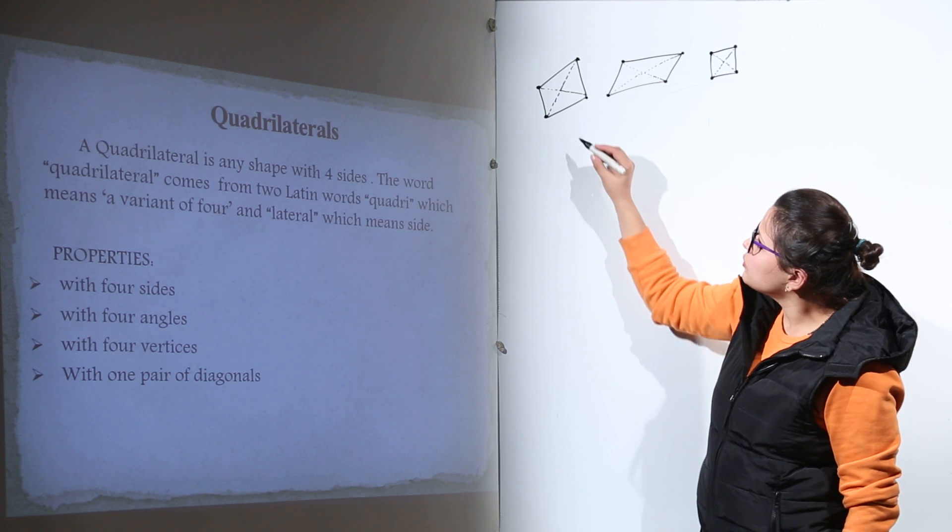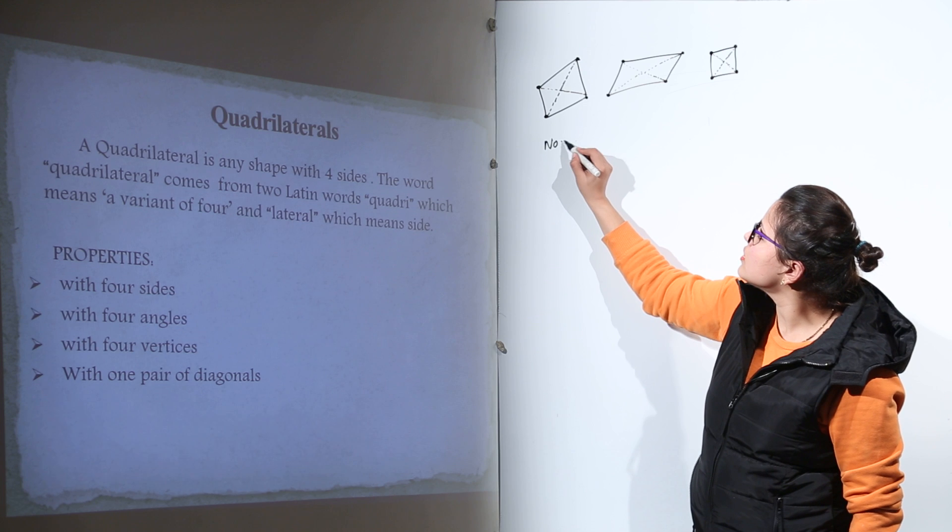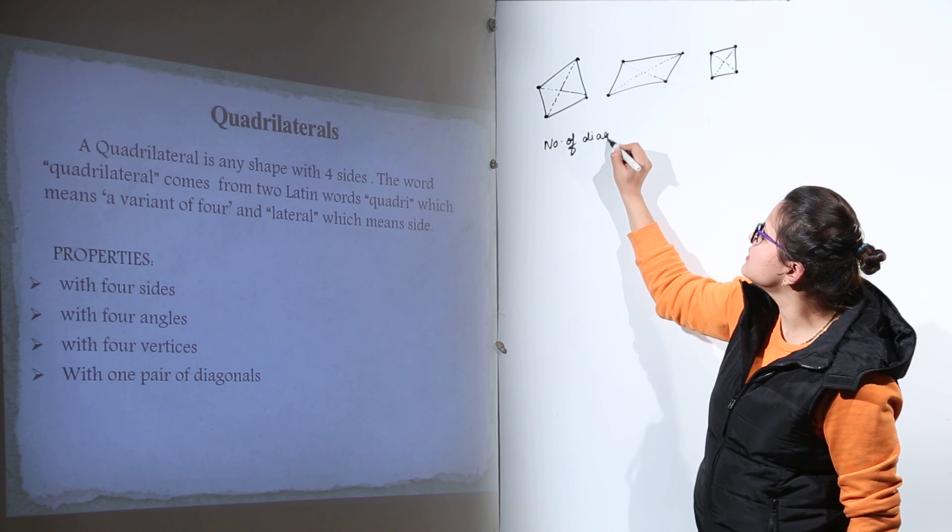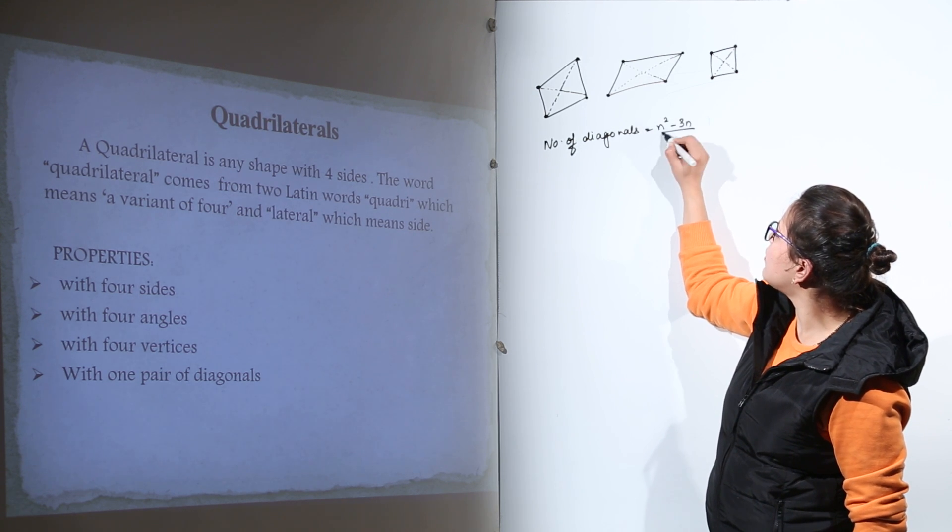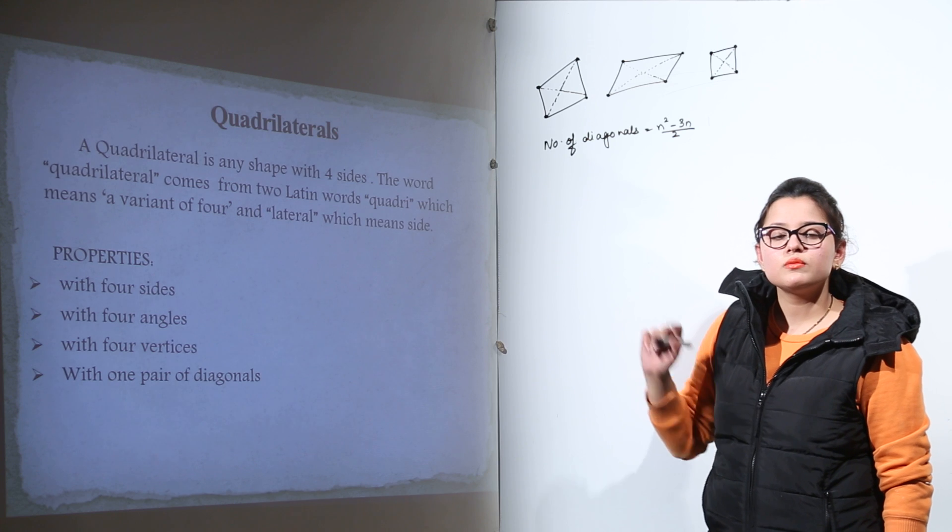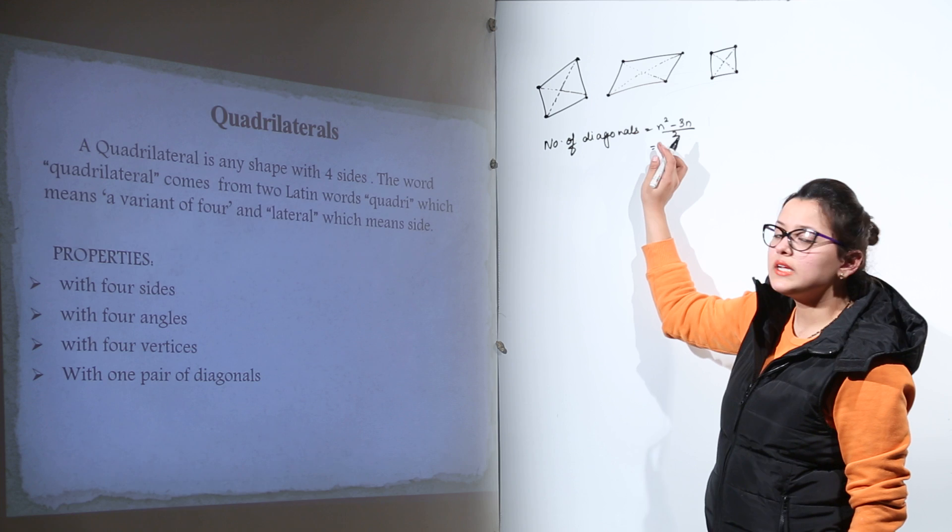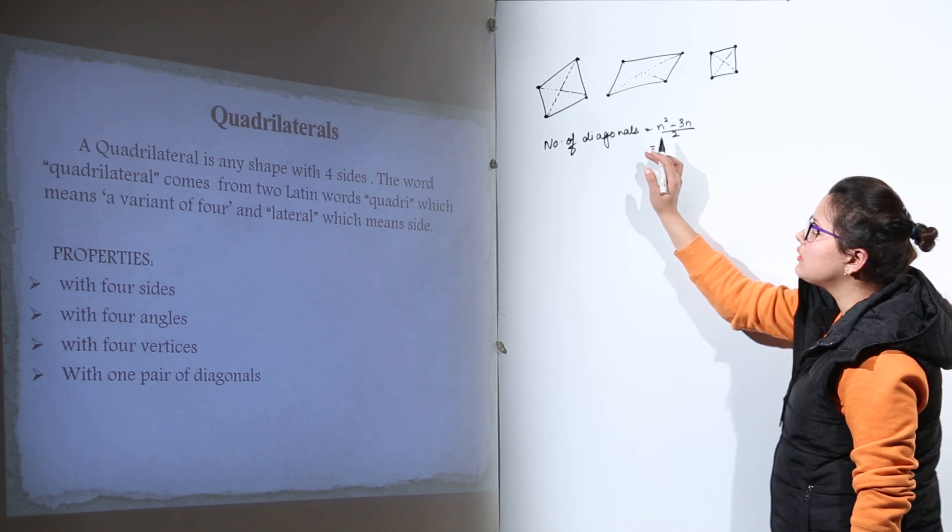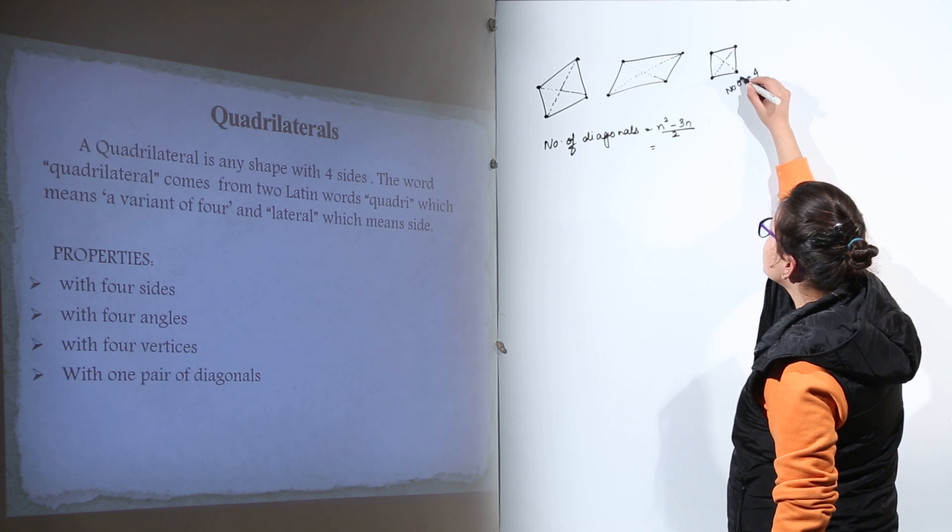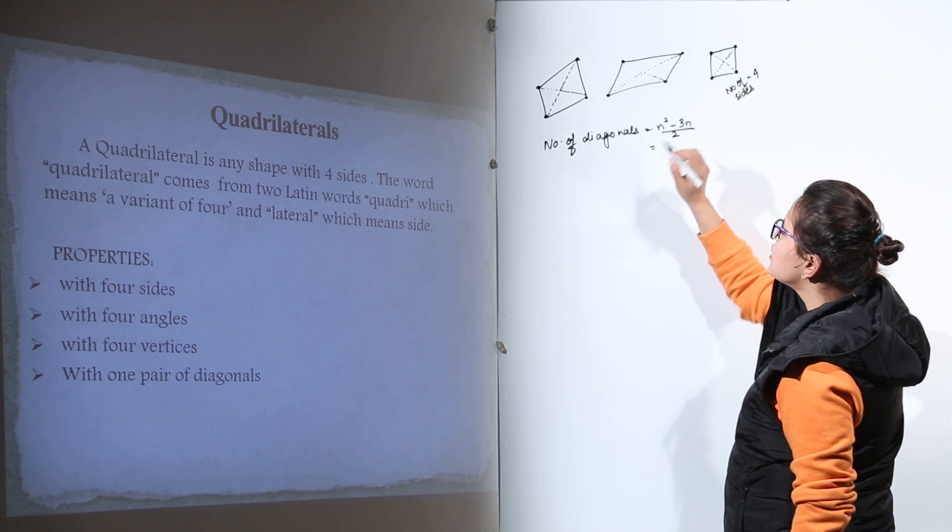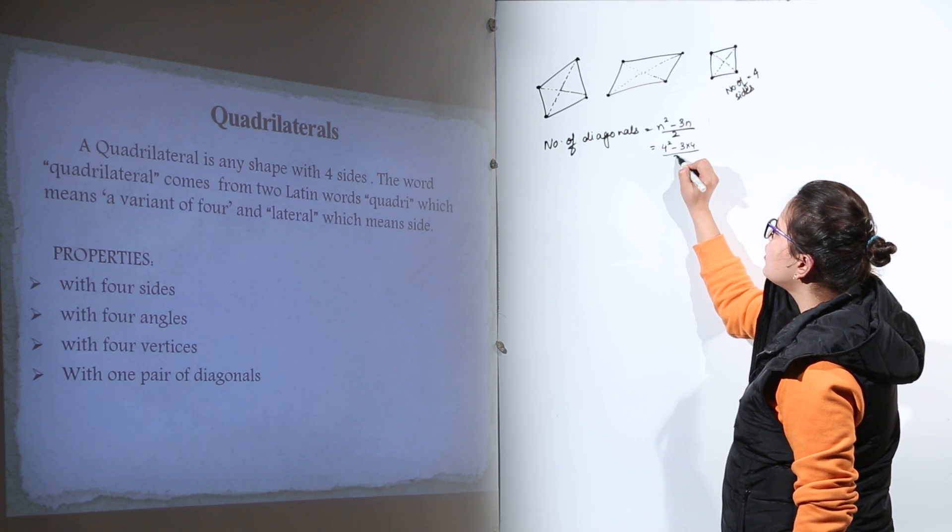We can also check this with the formula for diagonals. The formula for number of diagonals is n squared minus 3n upon 2. How many diagonals will be possible for each case? What is the value of n here? n is the number of sides. Since each quadrilateral has 4 sides, we write 4 squared minus 3 times 4 upon 2.